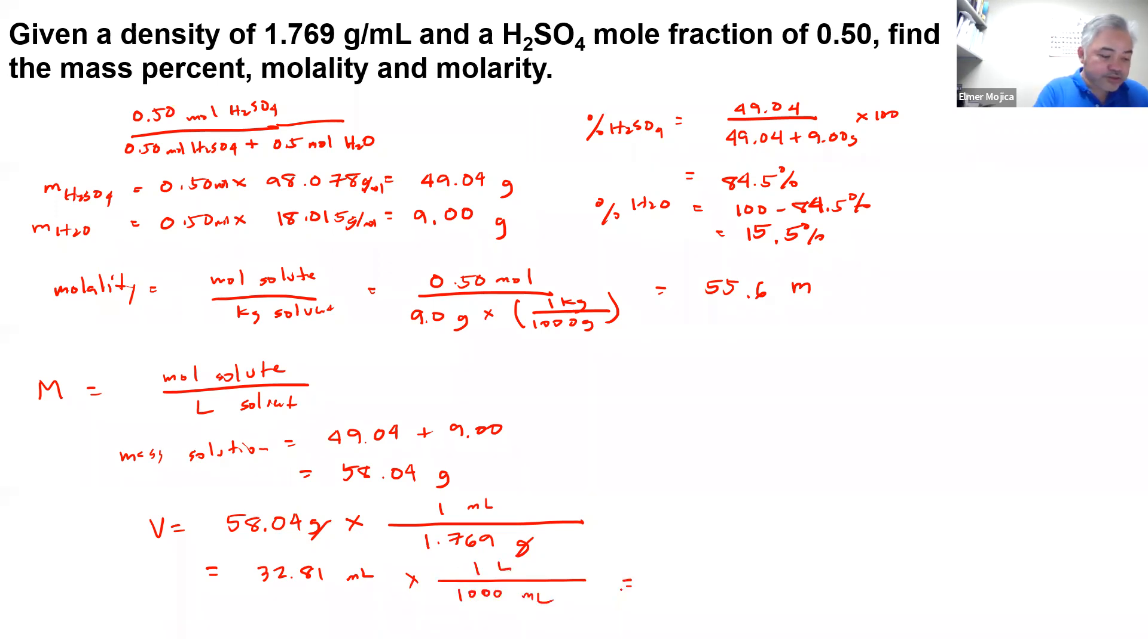So you will have here 0.03281 liters, so you have the 0.5 moles divided by 0.03281 liters. So that will give you around 15.24 or 15.2 molar.